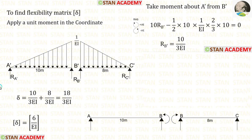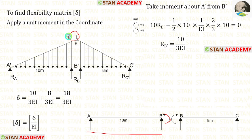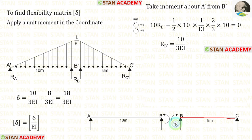Now let us see how to make the flexibility matrix. For that, we have to apply a unit moment in the coordinate. In this analysis, we are having only one coordinate at point B, so at point B we have to apply a unit moment of 1. In beam AB, the unit moment will be acting in the anticlockwise direction. Because of the moment, the bending moment here will be 1 and at the other end 0, so the bending moment diagram will be a triangular shape. In beam BC, the unit moment will be acting in the clockwise direction, giving bending moment 1 at B and 0 at C — here also a triangular shaped bending moment diagram.